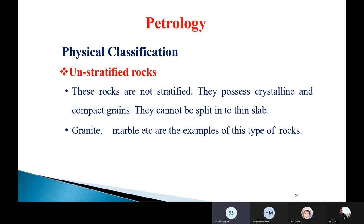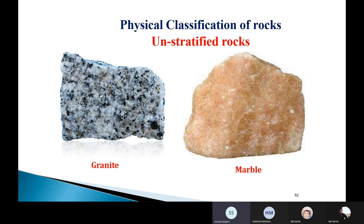Observing an unstratified rock, you will notice it is completely compact in nature with grains that are tightly packed. The rock exhibits a crystalline nature throughout its body. This type of rock — compact, massive, crystalline — comes under unstratified rocks.